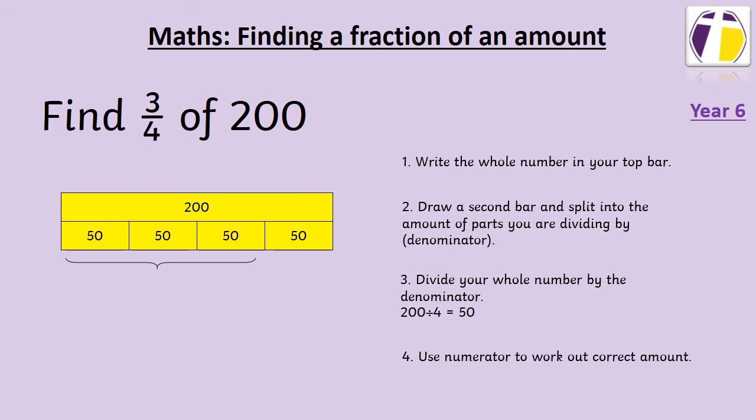Therefore, we can tell that 3 quarters of 200 is 150, as we are adding 50 3 times, or doing 50 multiplied by 3.